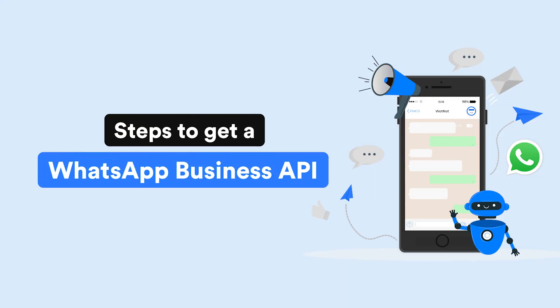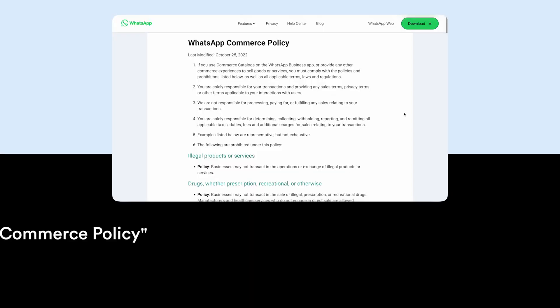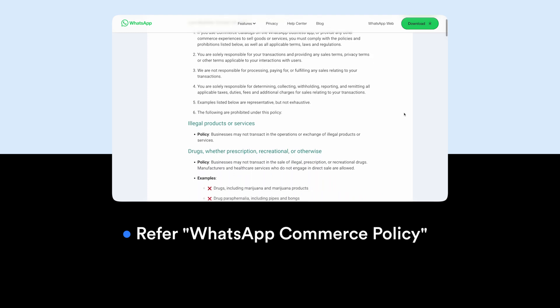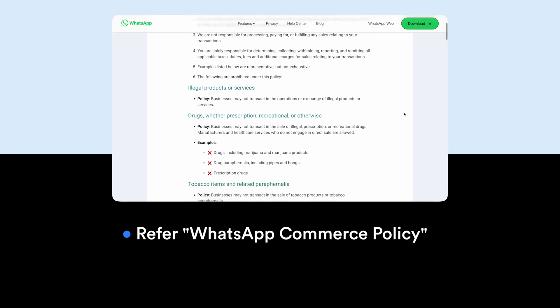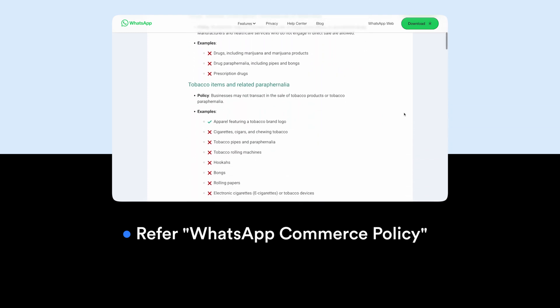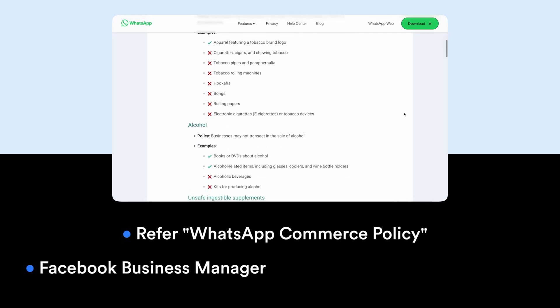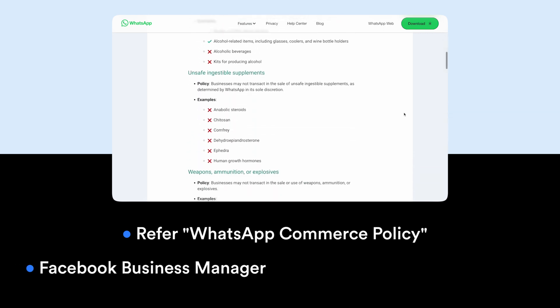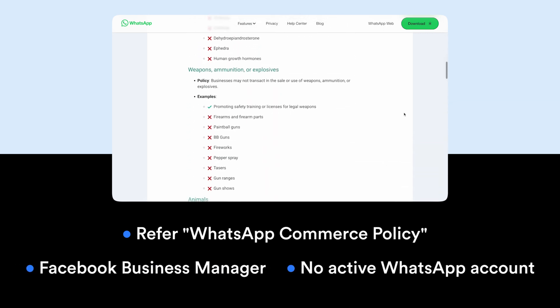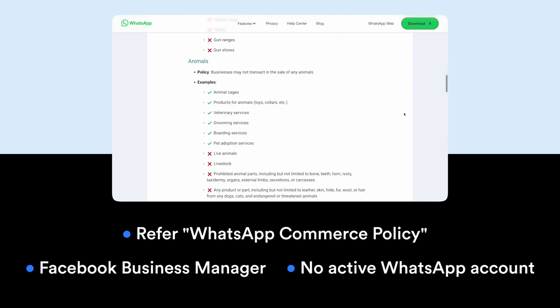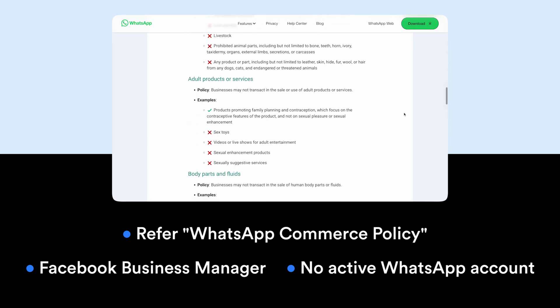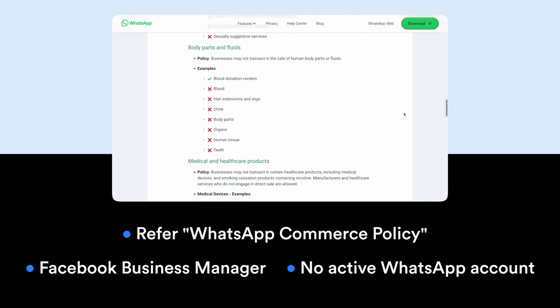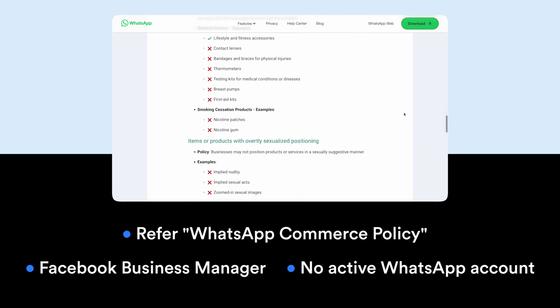Now let's look at the steps to get a WhatsApp Business API. Firstly, you need to make sure that your business meets the eligibility criteria. WhatsApp Business API is currently available to medium to large businesses, nonprofit organizations, and enterprises. The business must also have a Facebook Business Manager account. Another important criteria is that the number for which you want WhatsApp Business API should not have an active WhatsApp account linked to it.